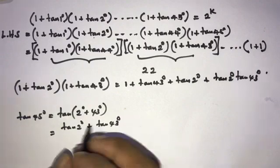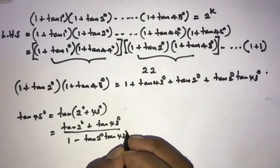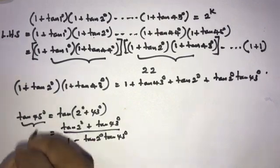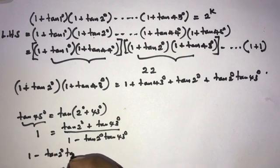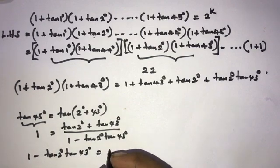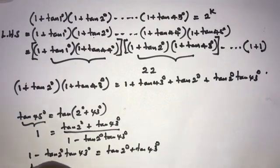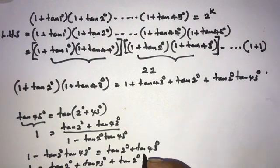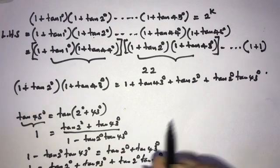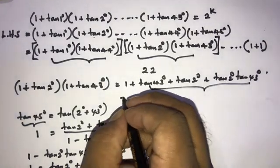Since tan(45°) = 1, we have: (tan2 + tan43) / (1 - tan2·tan43) = 1, which gives tan2 + tan43 = 1 - tan2·tan43. Rearranging: 1 = tan2 + tan43 + tan2·tan43.